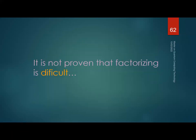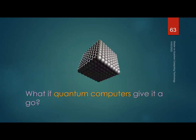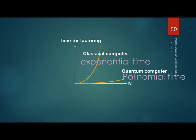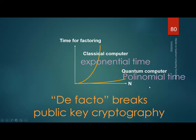The problem is it is not mathematically proven that factorizing is difficult — there's no formal proof. Someone could come up with a faster factorization algorithm at any time. And what happens when we give this to a quantum computer? This was already solved by Peter Shor in the 1990s at AT&T Labs with his famous Shor's algorithm, which reduces the time from exponential on a classical computer to polynomial time — effectively breaking public-key cryptography.